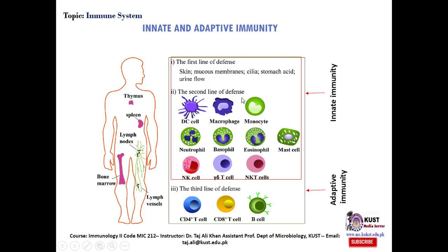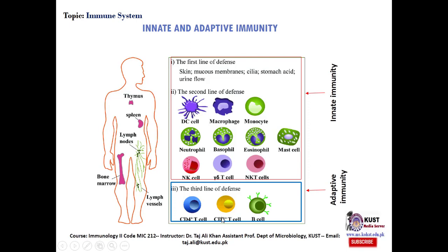The second line of defense includes phagocytic cells and macrophages. If innate immunity fails to control the infection and the pathogen breaches innate immunity, there is another line of defense called the third line of defense or adaptive immunity, which consists of T lymphocytes and B lymphocytes. B lymphocytes generate and mature in the bone marrow, while T lymphocytes after generation move to the thymus where they mature. After maturation, B and T lymphocytes are deployed to different parts of the body where they interact with and eliminate antigens.